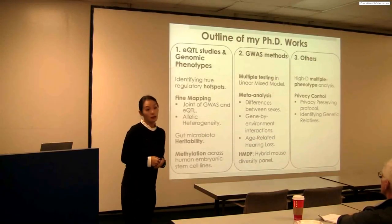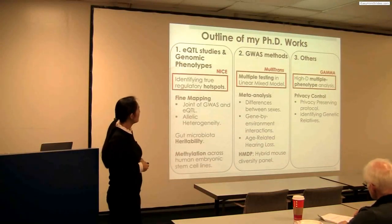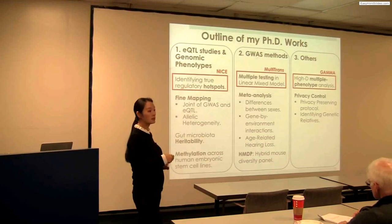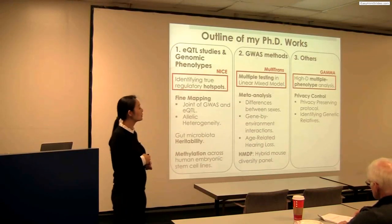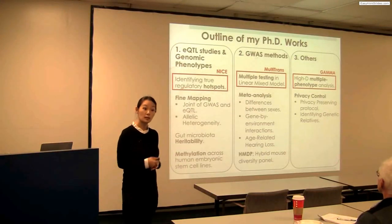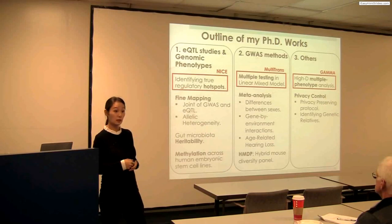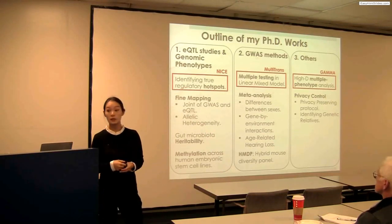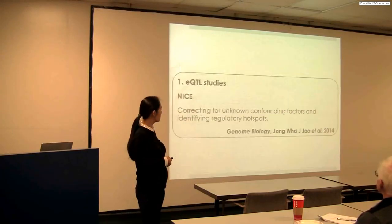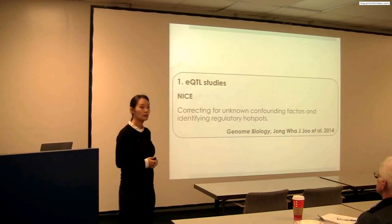These are the topics I've been working on during my PhD, shown in three categories. Today I will show one representative work from each category. From the first category of EQTL studies and genomic phenotypes, I will introduce NICE, which tries to identify true regulatory hotspots in EQTL studies. In the second category of GWAS methods, I will introduce Multi-Trans, a multiple testing correction in linear mixed model. Lastly, I will introduce Gamma, a high-dimensional multiple phenotype analysis.